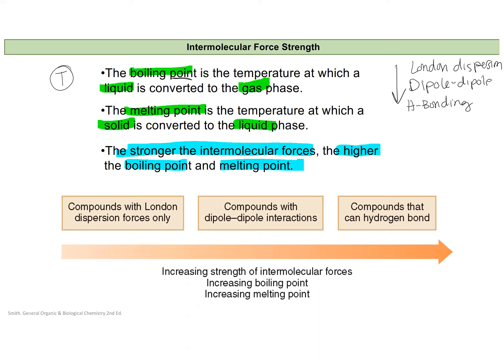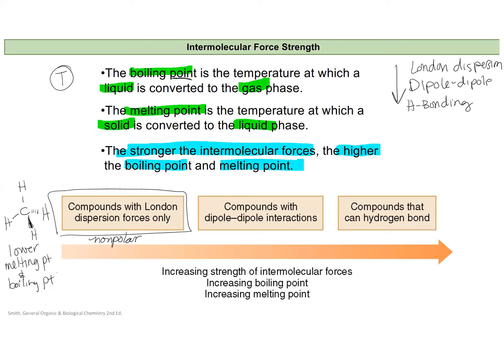What we mean by 'more' is overall strength. If something has only London dispersion forces — for example, something that is non-polar, like methane — it would have a lower melting point and boiling point. At room temperature, which is 25 degrees Celsius, methane has already boiled. It's already a gas at room temperature because its intermolecular forces are so weak.